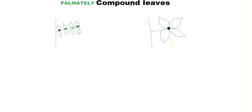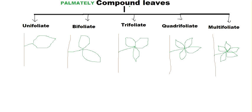This type of leaf looks like a flower with the leaflets as petals. When discussing the classification, we use the word 'foliate' — like unifoliate, bifoliate, and so on, similar to how we used 'pinnate' earlier. Palmately compound leaves are classified as unifoliate, bifoliate, trifoliate, quadrifoliate, and multifoliate, and there can be more than five leaflets.